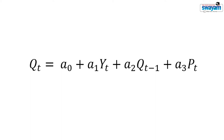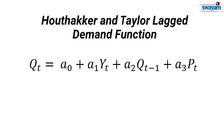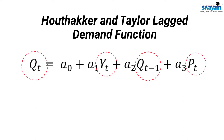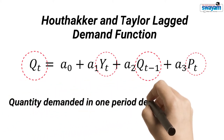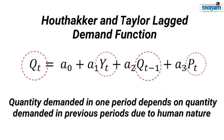This is the mathematical expression for the Horthecker and Taylor lagged demand function. T is the current time period. Qt is the current quantity demanded. Yt is the current income. Pt is the current price. Qt-1 is the quantity demanded in the previous period, or the lagged demand. Horthecker and Taylor argued that the quantity demanded in any one period depends on the quantity demanded in previous periods due to human nature.